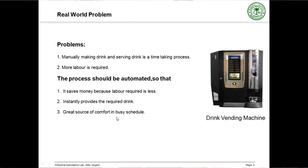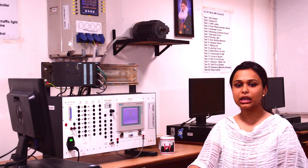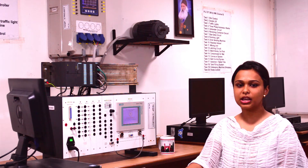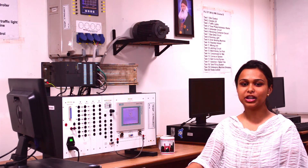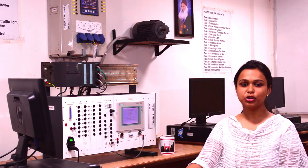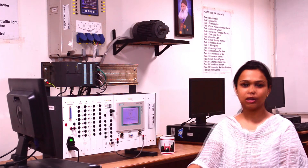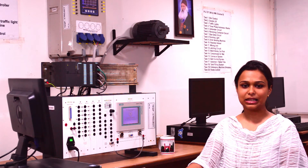First I will take up the real world problem description. Manually making and serving a drink is a very time-consuming process. A lot of labor is required and therefore it is expensive too. So automation of the ring vending machine is done because it provides the drink instantly.